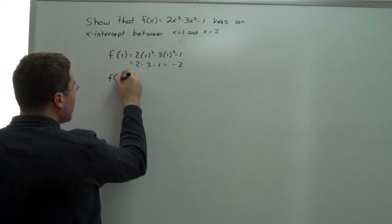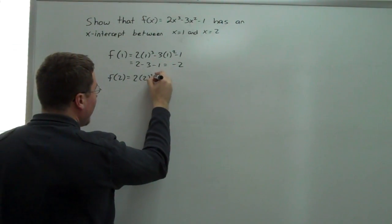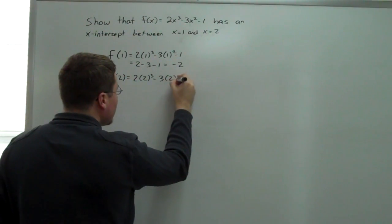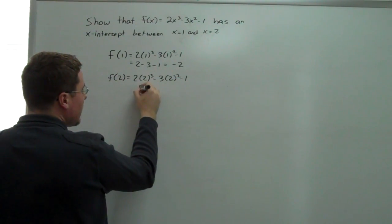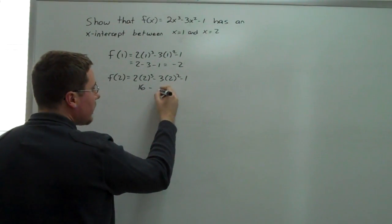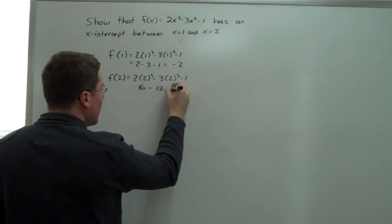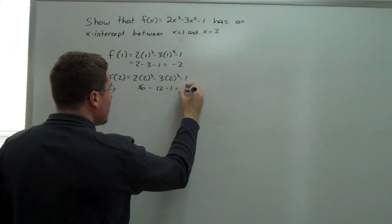Then we're going to compute f of 2, which is 2 times 2 to the third minus 3 times 2 squared minus 1. Now this is going to be 8, 2 times 8 is 16, 2 times 2 squared is 4, 3 times 4 would be 12 minus 1. 16 minus 12 is 4 minus 1 is equal to 3.